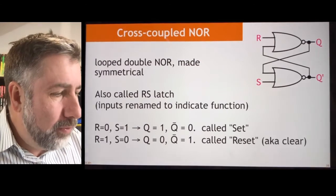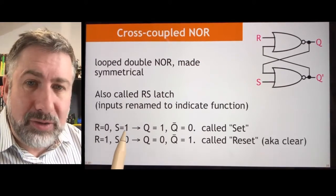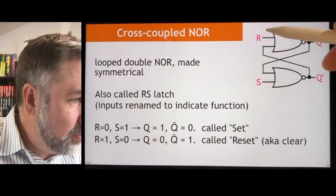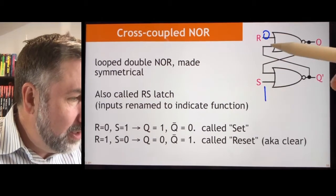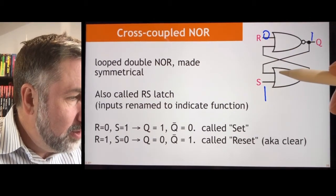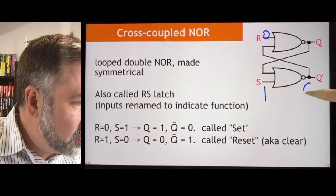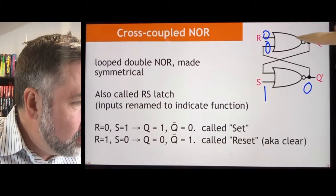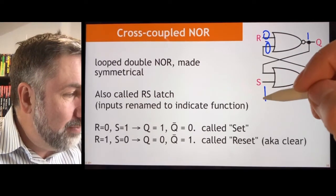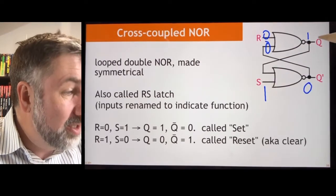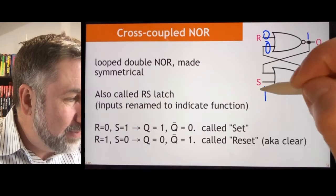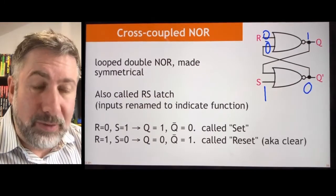Just like before, if we set R to 0 and S to 1, so if we put a 0 here and a 1 here, a 1 here forces this to be a 0. Two 0s make a 1. And that means that we're setting the value Q to 1, right? We set it to 1. So that works great.